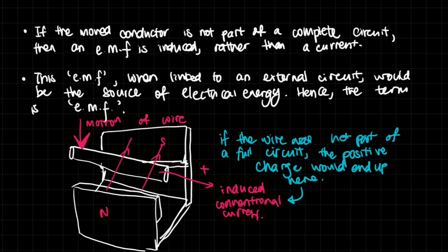If the moved conductor is not part of a complete circuit, then an electromotive force is induced rather than a full current — this makes sense because the electrons would be moved to one side but have to stop. There will be a surplus of electrons on one side, which creates a voltage and hence an electromotive force. This EMF, when linked to an external circuit, would be the source of electrical energy — hence the term electromotive force rather than voltage difference, because it can be a source of electrical energy. If the wire is not part of a full circuit, the positive charge would end up on one side because the electrons accumulate on the other side, and the absence of electrons constitutes a positive charge.